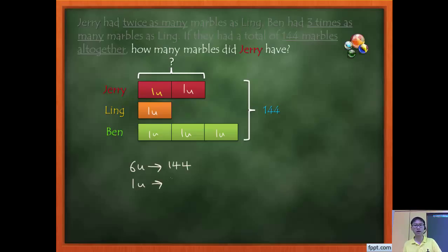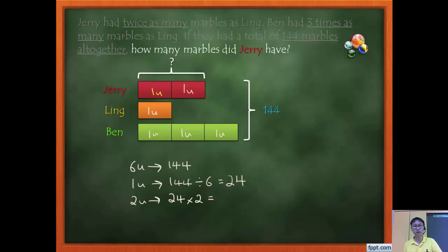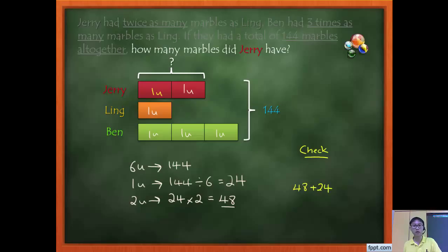6 units equals 144, so 1 unit equals 144 divided by 6, which is 24. Jerry has 2 units, so 24 times 2 equals 48 marbles. To check: Jerry has 48, Ling has 24, and Ben is 3 units so 24 times 3 equals 72. Adding 48 plus 24 plus 72 gives 144 — correct!